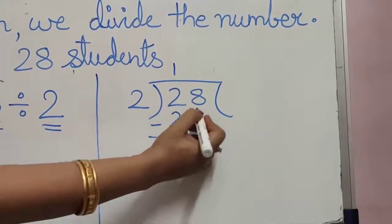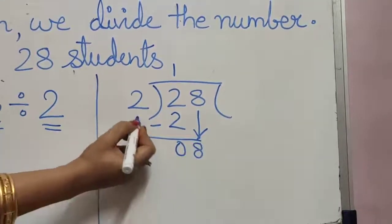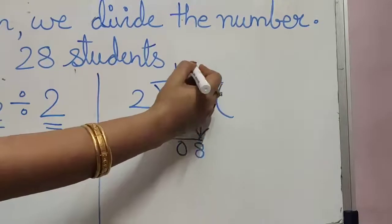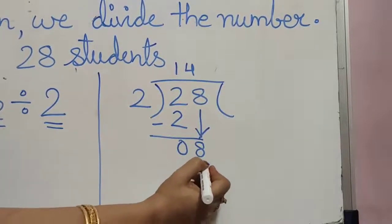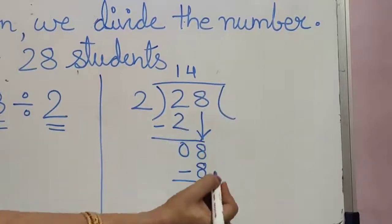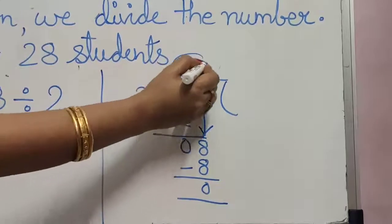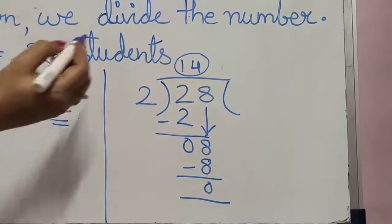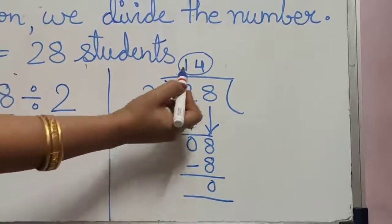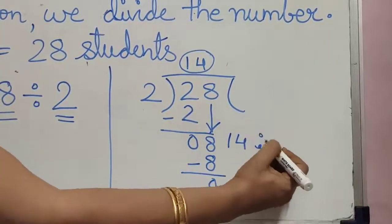We will take it down, 8 will come here. When 8 comes in the table of 2, 2 fours are 8. Again we will subtract, 0, nothing is there. So our answer is 14. It means if we divide 28 children in two groups, we will get 14 in each group.